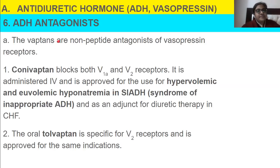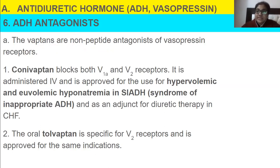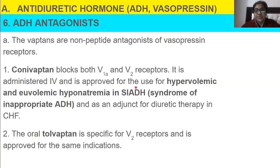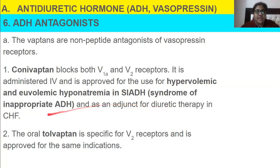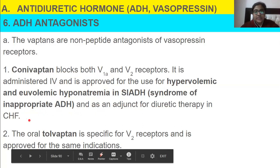ADH antagonists are called vaptans — non-peptide antagonists of vasopressin receptors. If earlier drugs reduced water in the urine, the vaptans increase excretion of water from the body. Conivaptan blocks V1a and V2 receptors, is administered IV, and is approved for hypervolemic and euvolemic hyponatremia in SIADH (syndrome of inappropriate ADH), and as an adjunct for diuretic therapy in congestive heart failure.